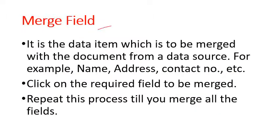Next: Merge Field — it is the data item which is to be merged with the document from a data source. In merge field, there are certain data items such as name, address, contact number, etc. that we need to merge with the main document. We click on the required field to be merged one by one.